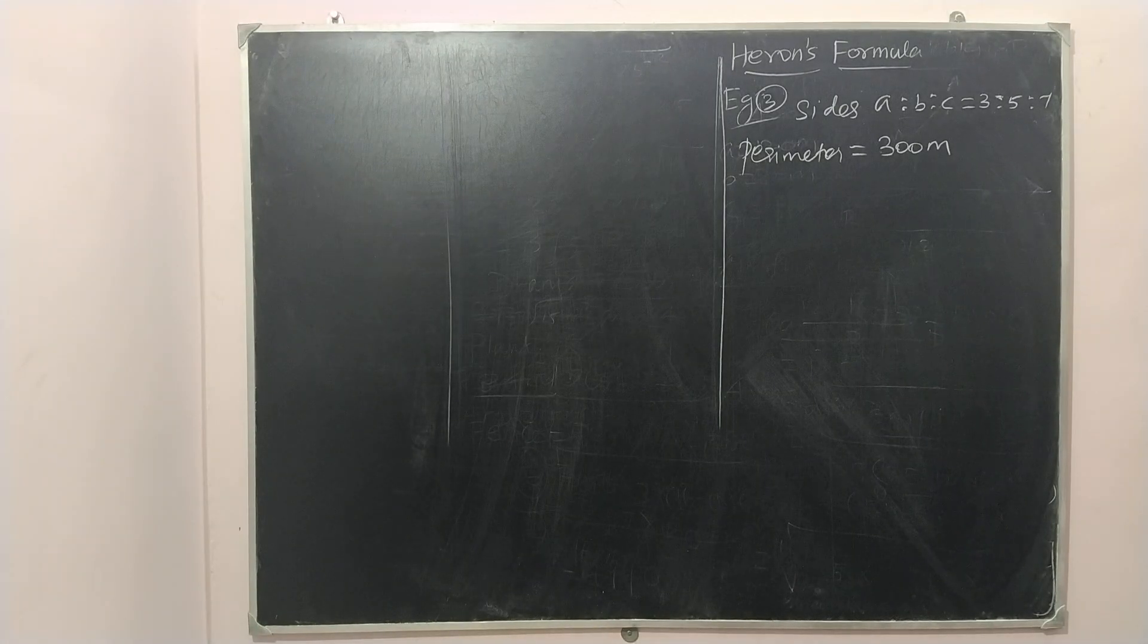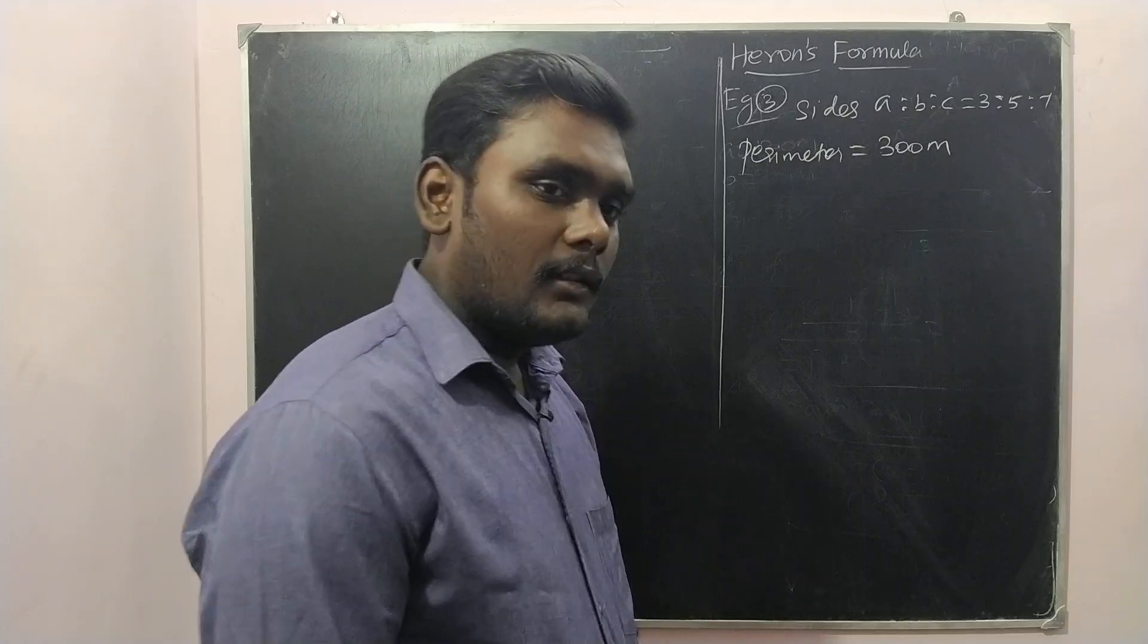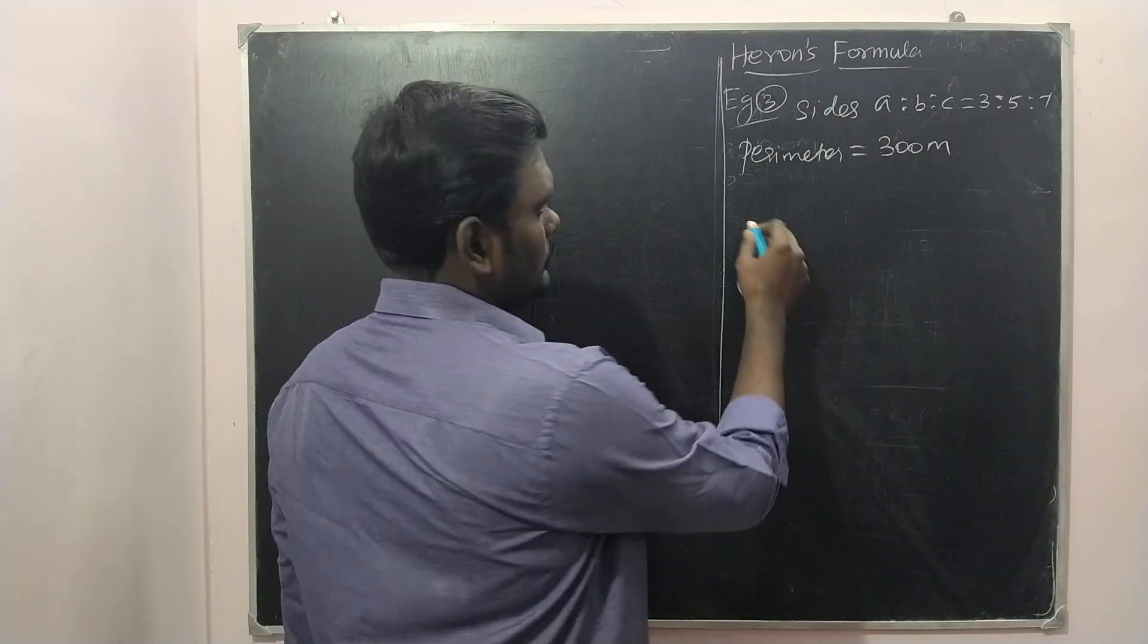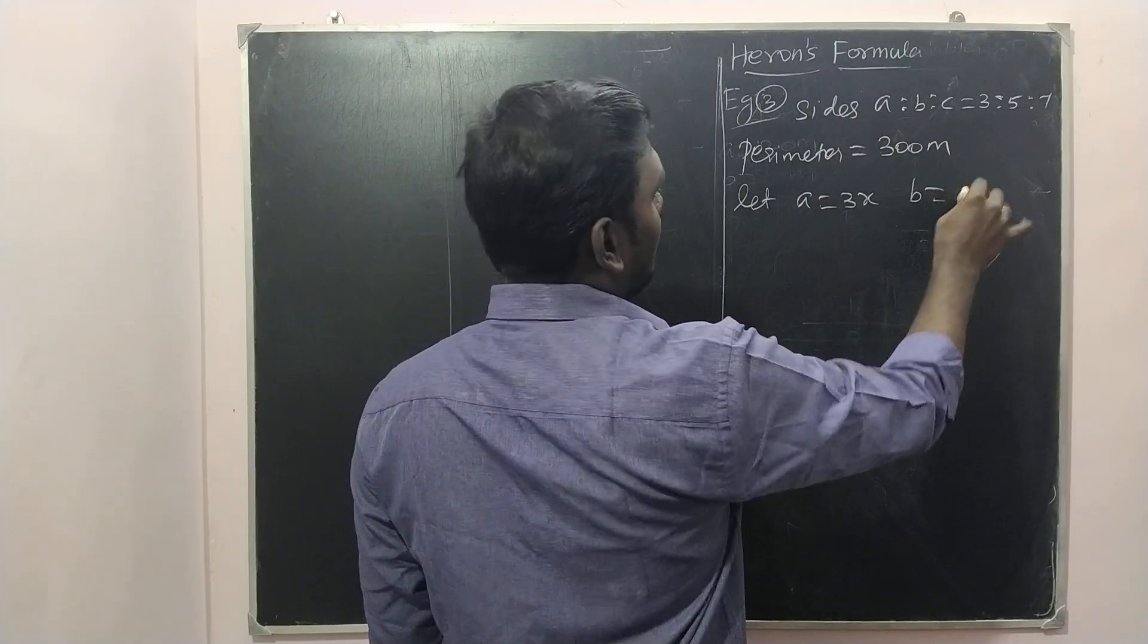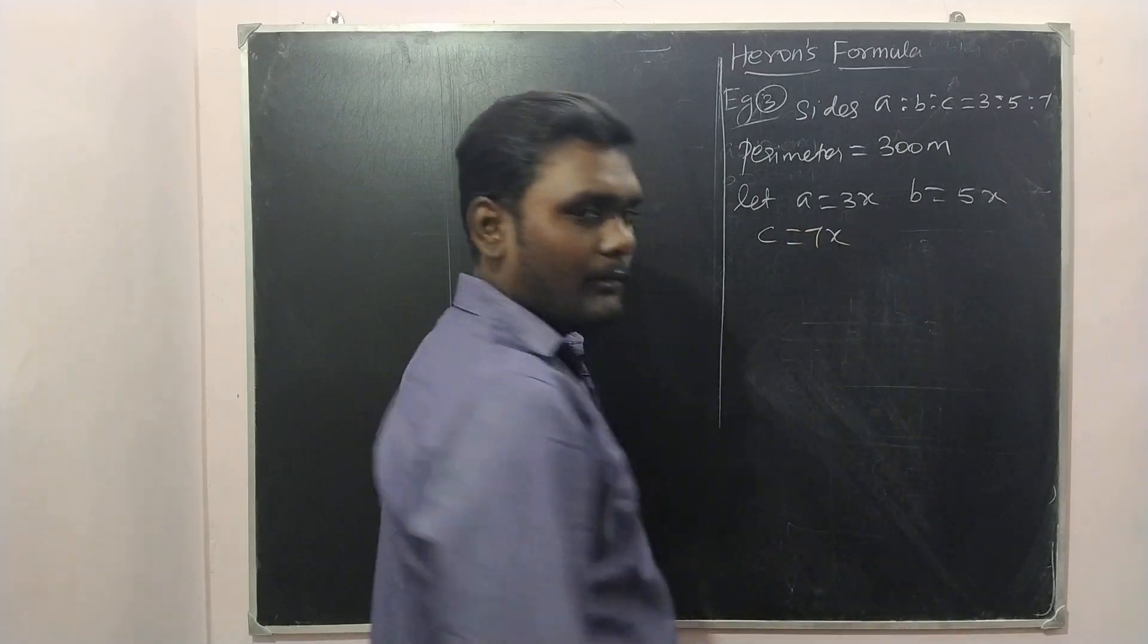The sides are not given directly, instead they gave ratio of the sides 3 is to 5 is to 7. Whenever they give ratio, what we have to do? Let the side a be 3x, the side b be 5x, the side c be 7x. Like this we will take one unknown.